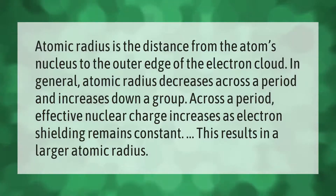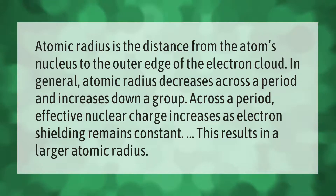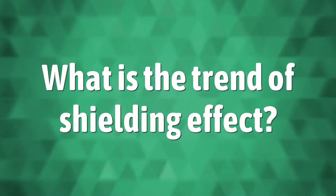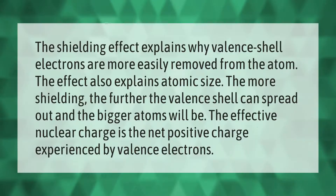Atomic radius is the distance from the atom's nucleus to the outer edge of the electron cloud. In general, atomic radius decreases across the period and increases down a group. Across the period, effective nuclear charge increases as electron shielding remains constant, resulting in a larger pull on electrons and smaller atomic radius.